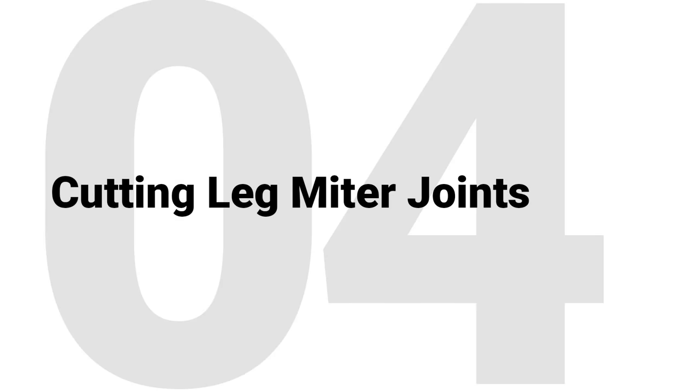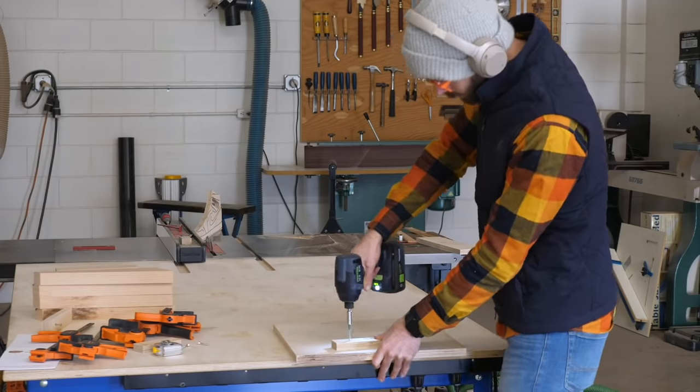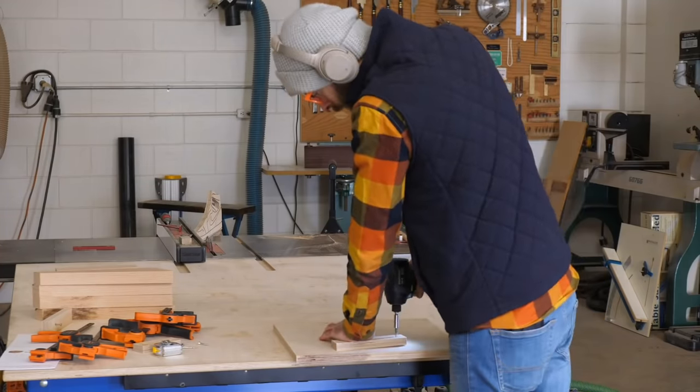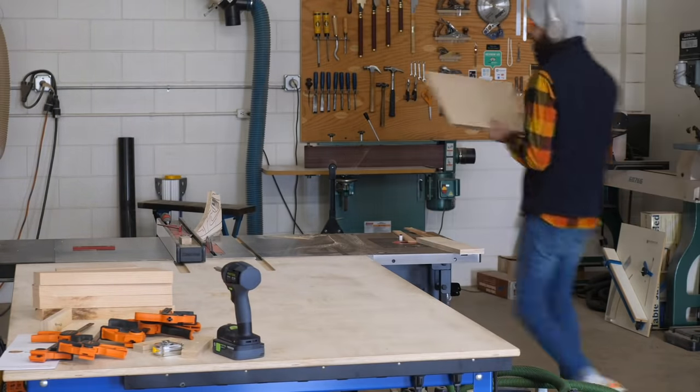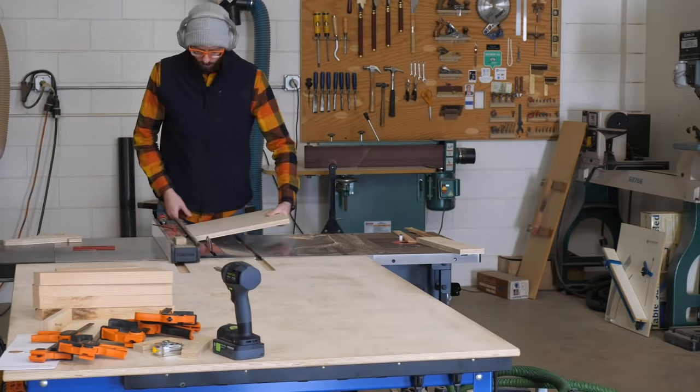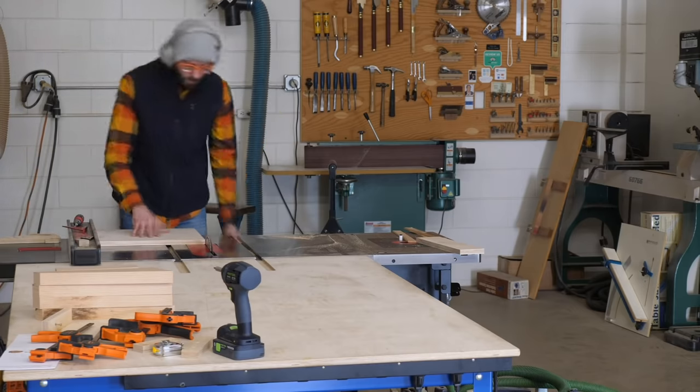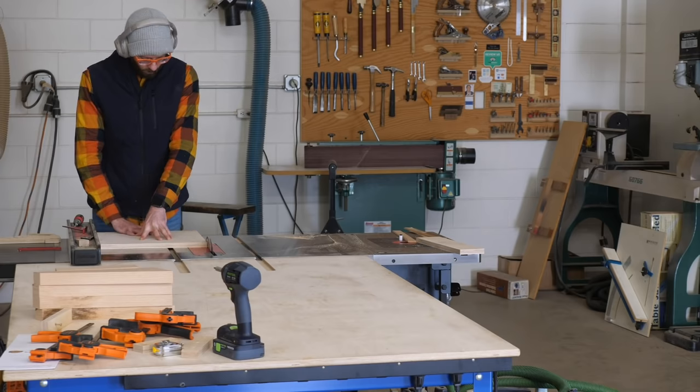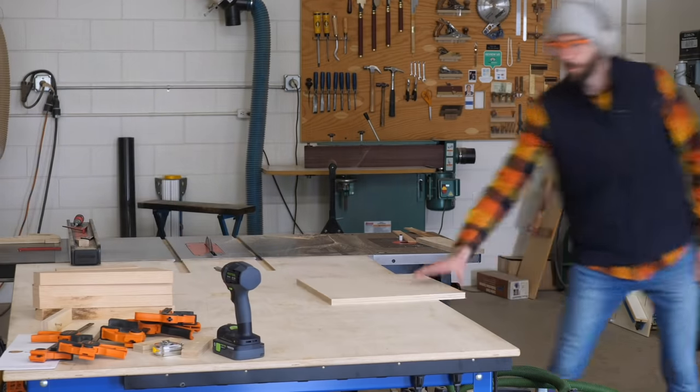To cut the miters for the joint faces of our leg sub-assemblies, we're going to use the same sled that we used in the last chapter. That said, you could use a miter gauge or a miter saw or anything that lets you safely cut a miter. So if you are using a sled and you happen to touch your fence since you used it last, reset your fence to just like a sixteenth of an inch in from 16 and re-establish a new cutting edge on your sled.